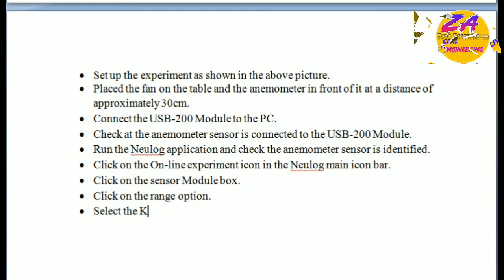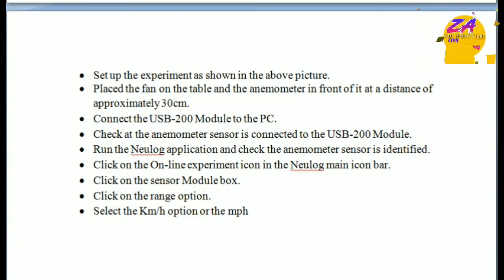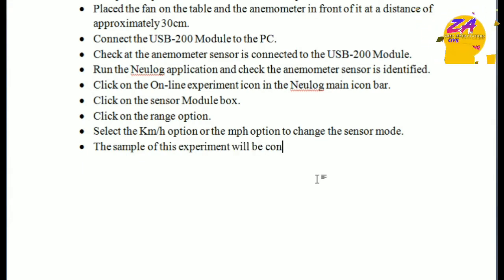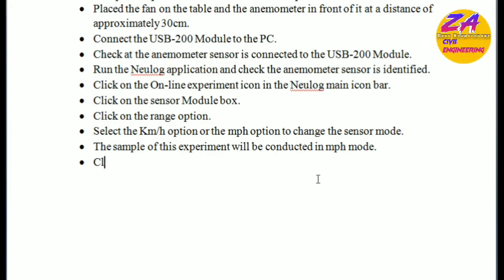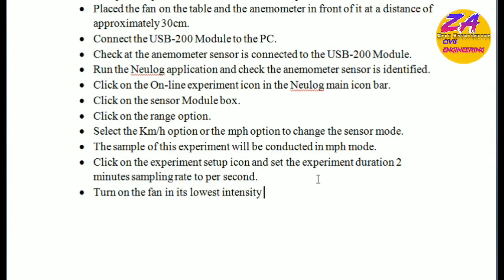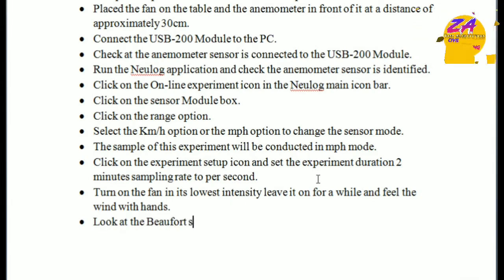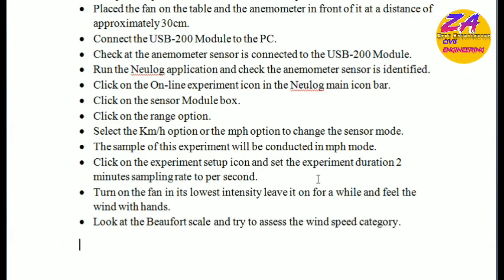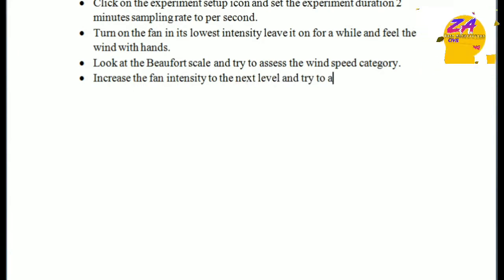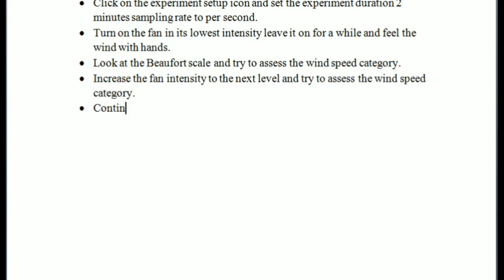Click on the online experiment icon in the NewLog main icon bar. Click on the sensor module box and click on the range options — select the kilometers per hour or meters per hour option to change the sensor mode. The samples for this experiment will be conducted in mph mode. Click on the experiment setup icon and set the experiment duration to two minutes, sampling rate two per second. Turn on the fan at its lower intensity, leave it on for a while and feel the wind with your hand. Look at the Beaufort scale and try to assess the wind category, then increase the fan intensity to the next level and assess the wind speed category.